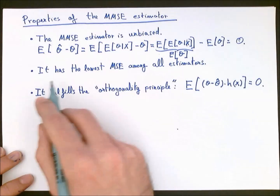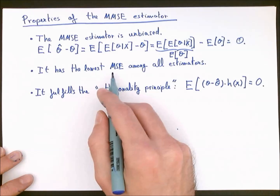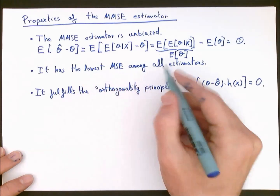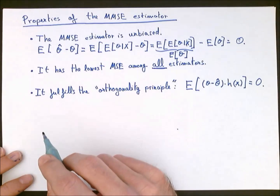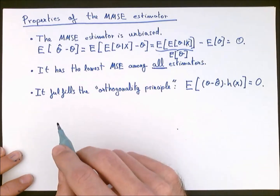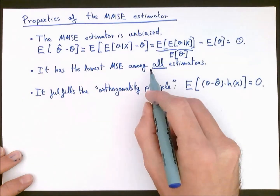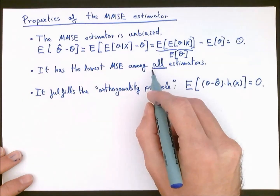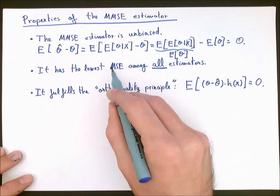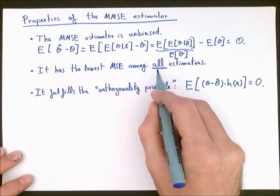The second property is that, as the name indicates, the MMSE estimator has the lowest MSE among all possible estimators for zeta. To show this, we look at the derivation of the MMSE estimator, which is precisely done by minimizing the mean squared error — we will show this in a different video.